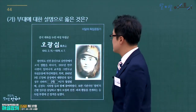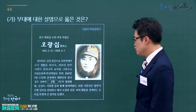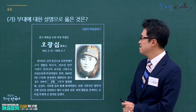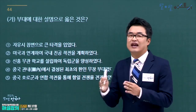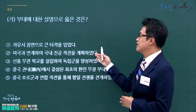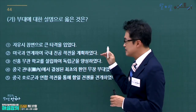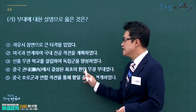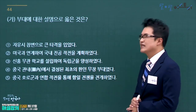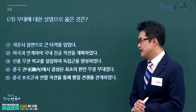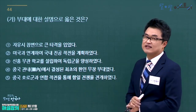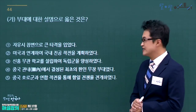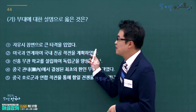충칭 대한민국 임시정부 산하 부대는 한국광복군입니다. 한국광복군에 대한 설명을 고릅니다. 자유시참변으로 큰 타격을 입은 것은 대한독립군단이고, 신흥무관학교는 1910년대입니다. 중국 관내에서 결성된 최초의 한인무장부대는 조선의용대입니다. 미국과 연계하여 OSS 훈련을 받고 국내 진공 작전을 준비한 것이 한국광복군이므로 정답은 2번입니다.